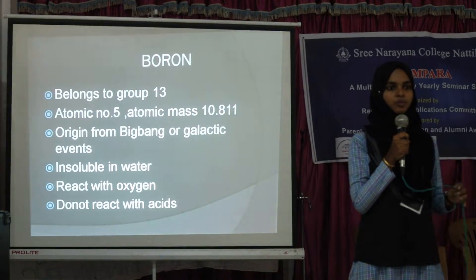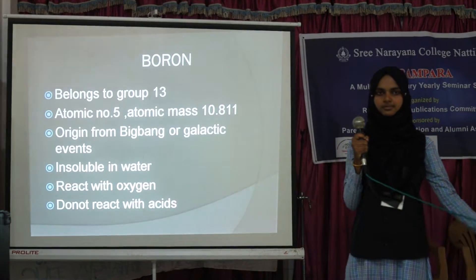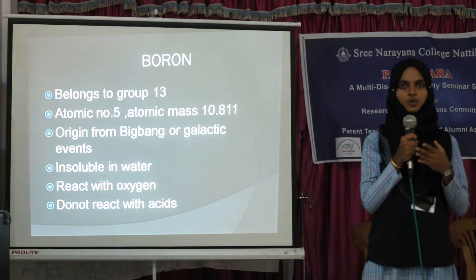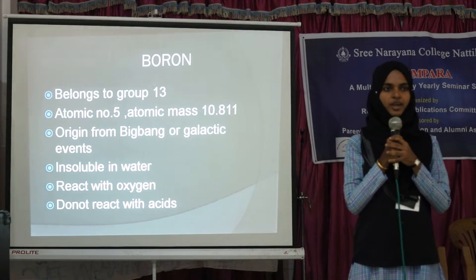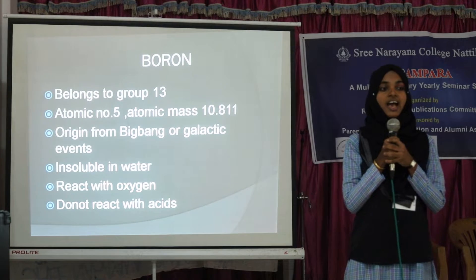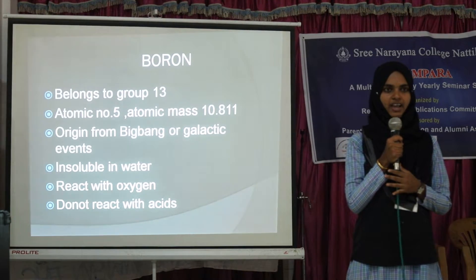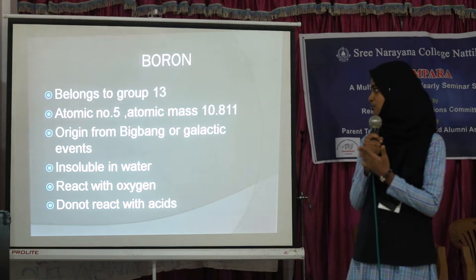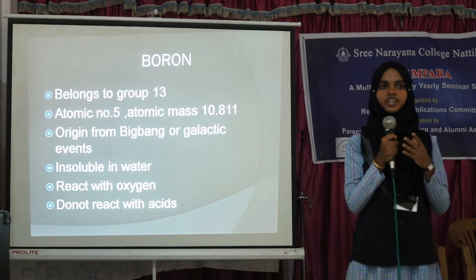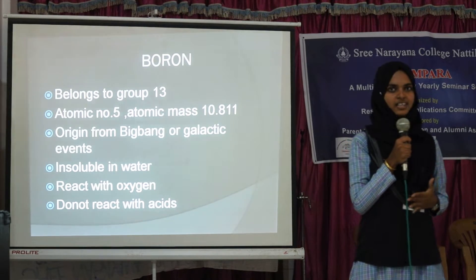As an introduction, I will bring you some of the properties of boron. As you all know, it is an element that belongs to Group 13, with an atomic number of 5 and atomic mass of 10.8–11. It is believed to have been oxygenated through galactic events and the Big Bang. Some of its chemical properties: it is insoluble in water, it reacts with air, and it will not react with acids.